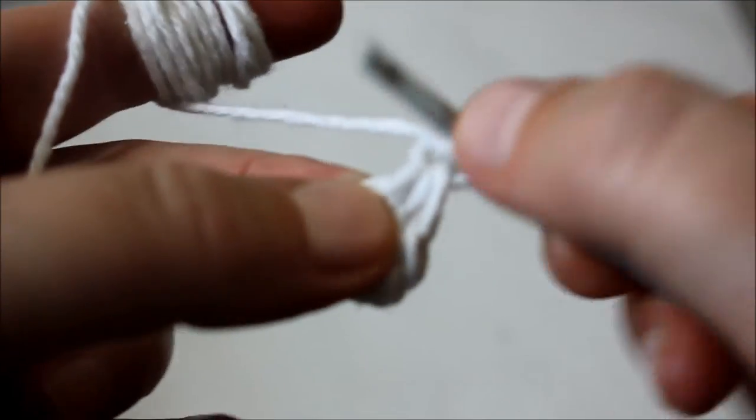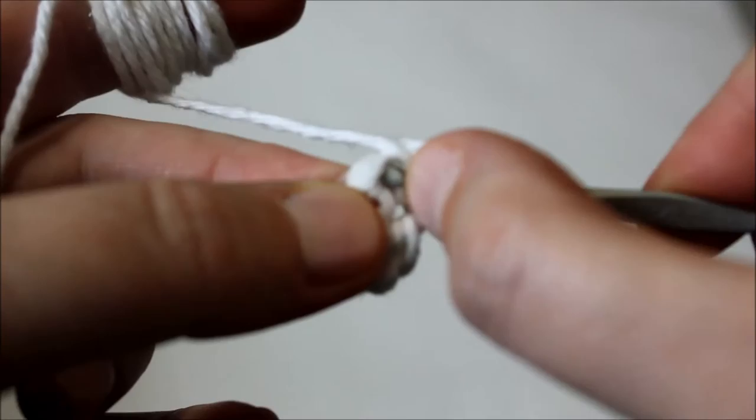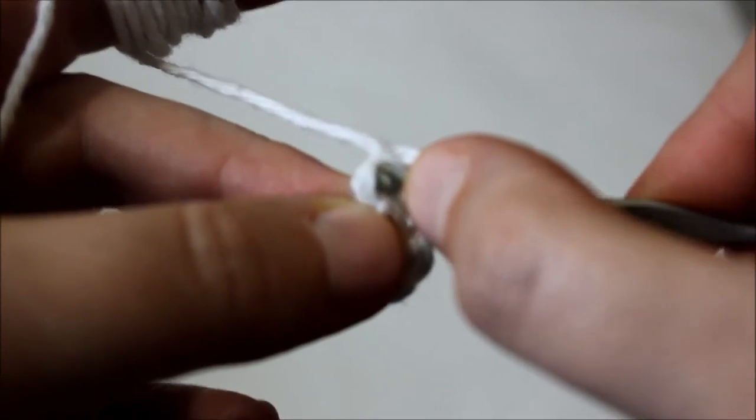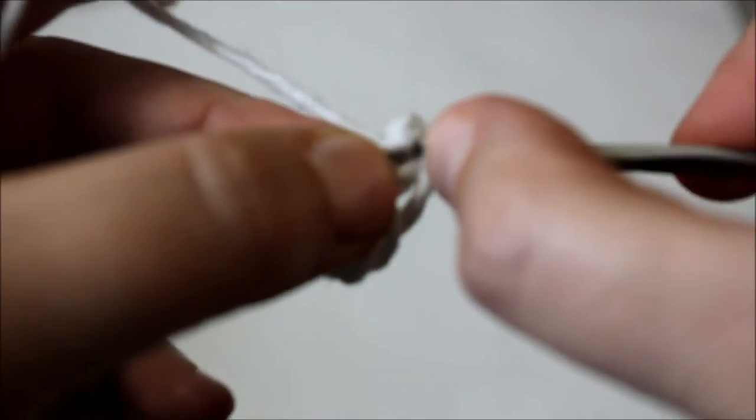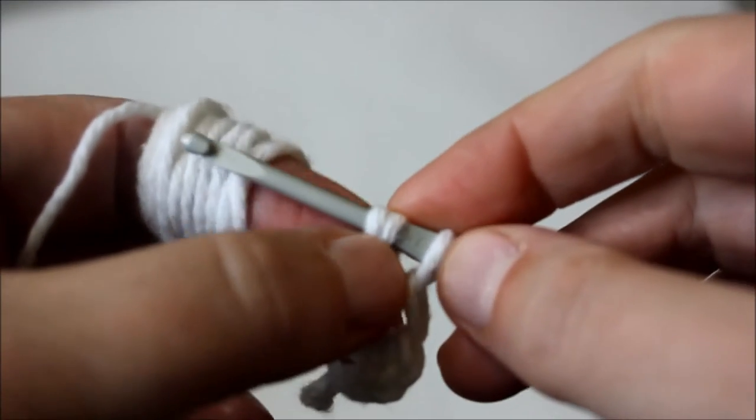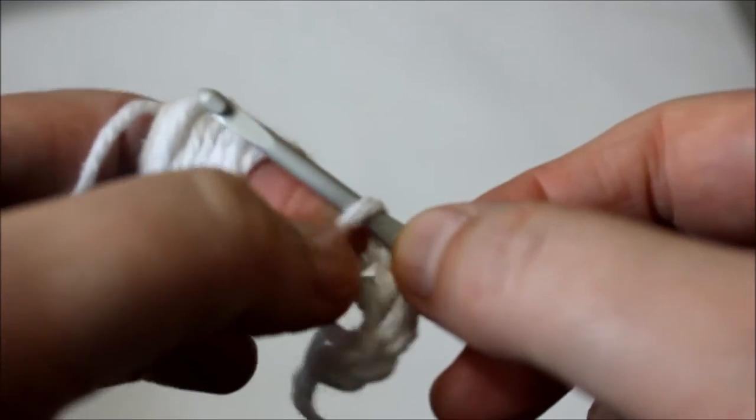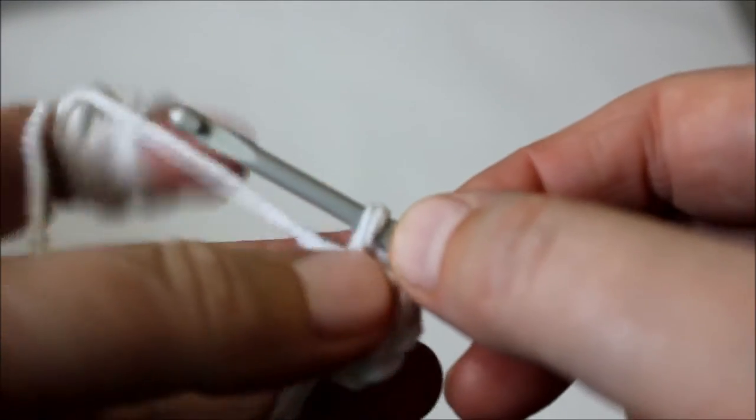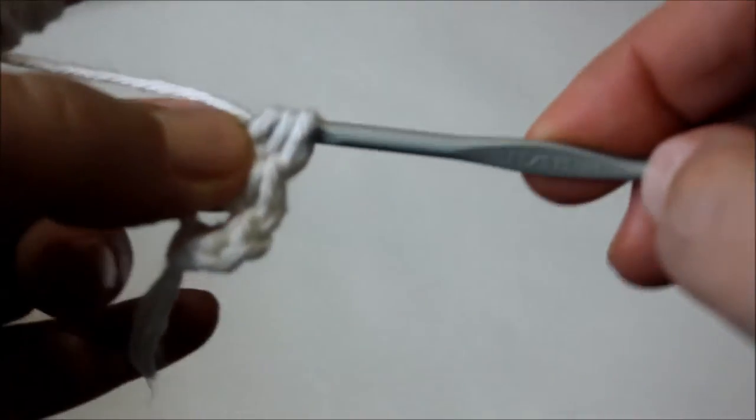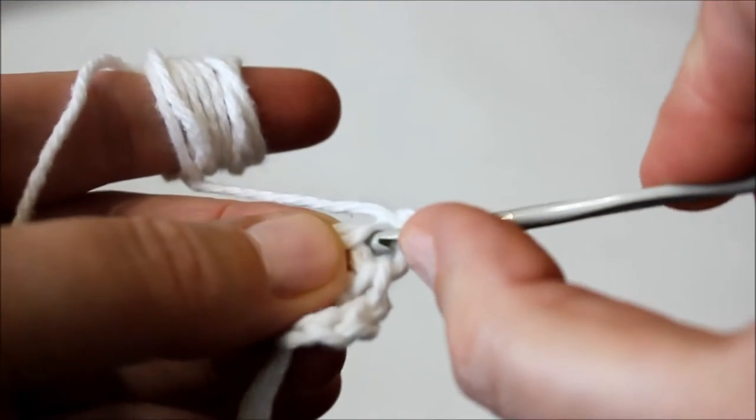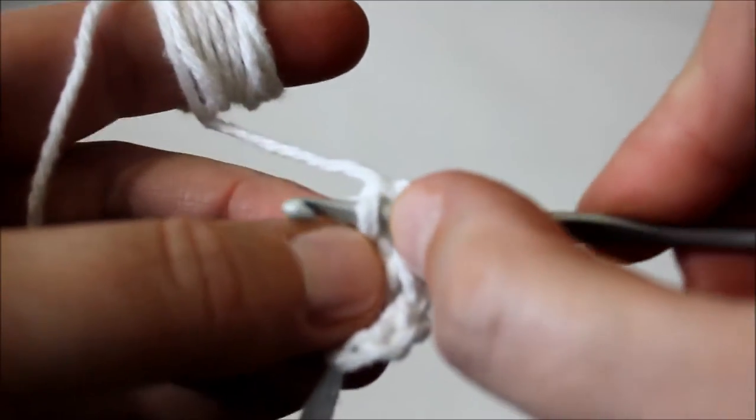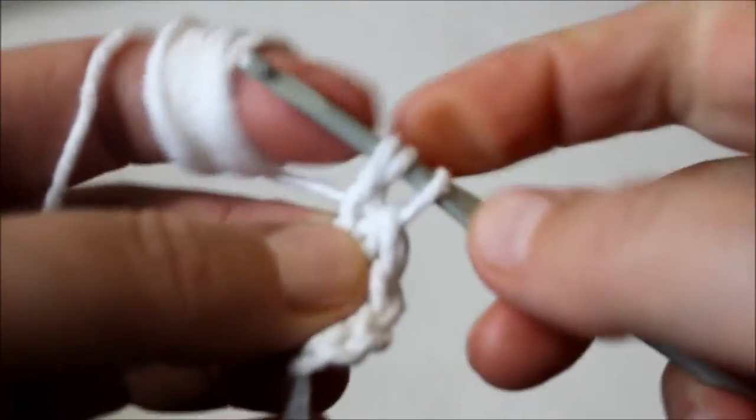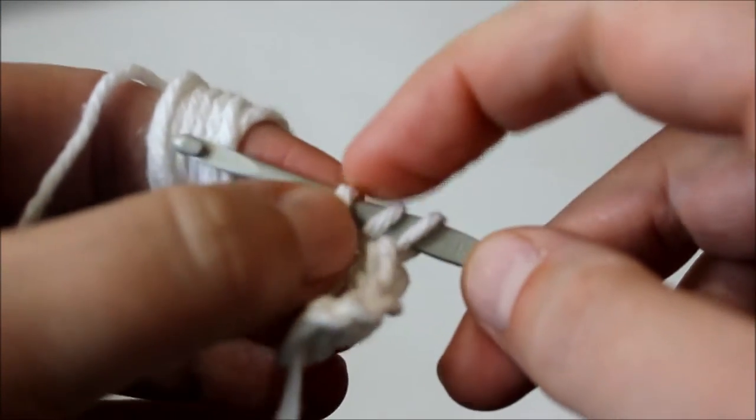So yarn over the first one. It's this part that we're grabbing, this here. So loosely, pull three loops at once. Yarn over, it's that loop, and this is going to be the next loop that we're going to be grabbing.